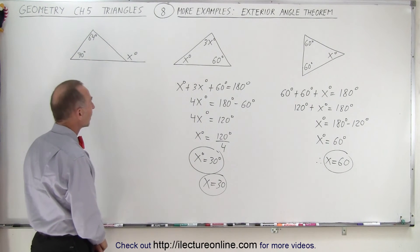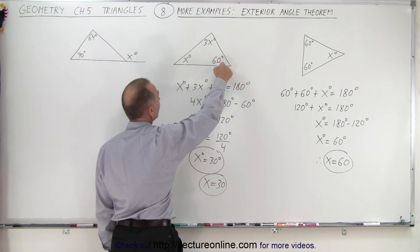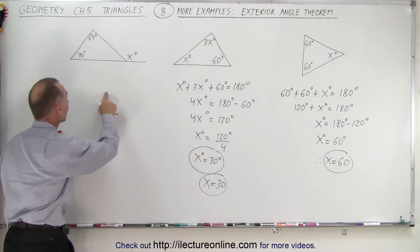And finally, let's see if that's correct. So 3 times 30 is 90 plus 60. That would be 150 plus 30 is 180. So that does check out. Alright. Last one.